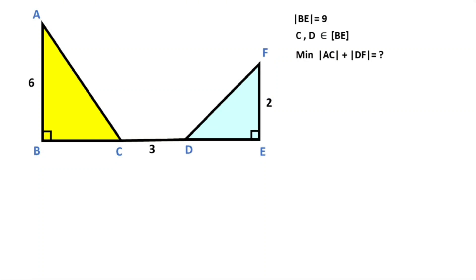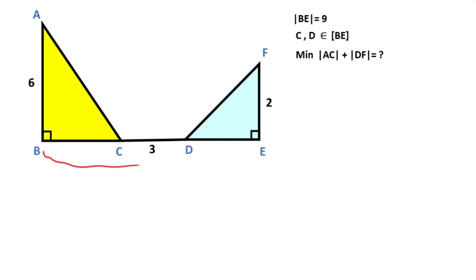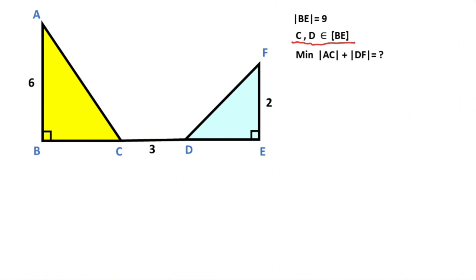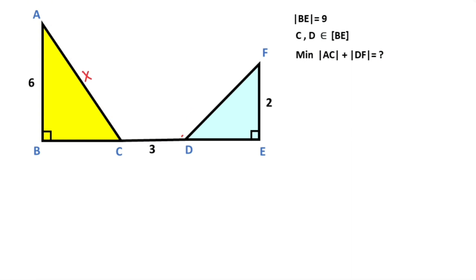Hello everyone. In this video we have to write a triangle. This length is given six, here is given three, this length is given two units, and the length of BE is given nine units. Points C and D are given as elements of line segment BE. The question is: what are the minimum lengths of the line segments AC and EF? First of all, let's call here x and this length let's call y.